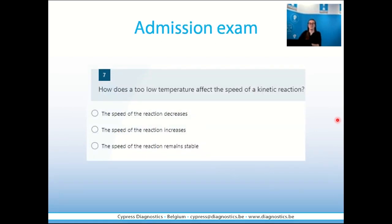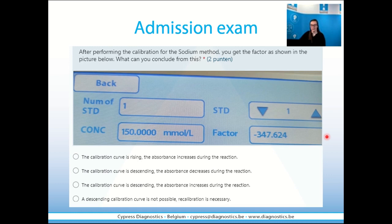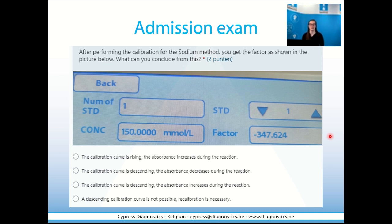The goal of today is not that I give you the correct answer, but that I guide you through the correct theory behind it. One of the questions is: how does a too low temperature affect the speed of a kinetic reaction? We show you three possibilities and it's up to you to choose the correct answer. A similar question asked during the exam is related to the factor — a factor is shown on screen and we are interested in the negative symbol before the value. We ask what does this negative factor mean: will the absorbance go up, go down, or is it correct or not?